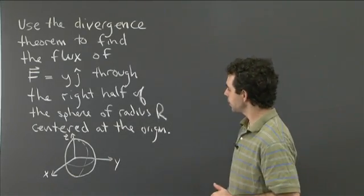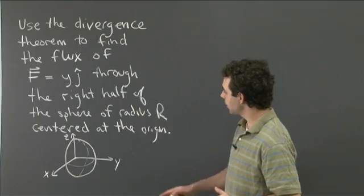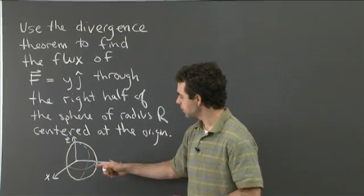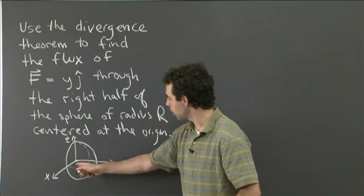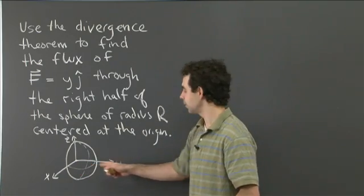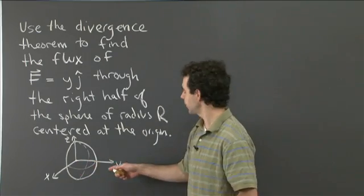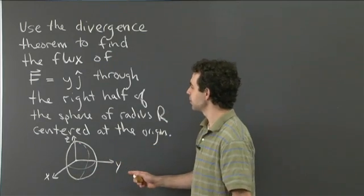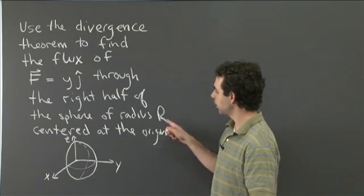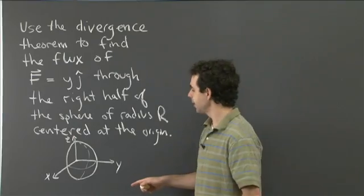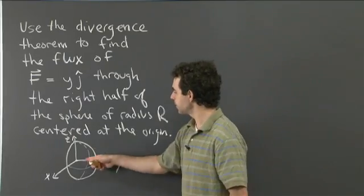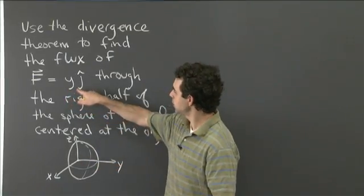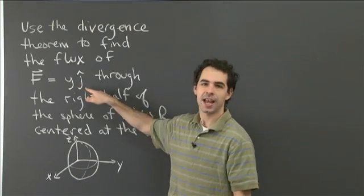So in this situation, I have a hemisphere — it's the right half of a sphere, the part where y is positive or non-negative. So just the surface of that hemisphere. It has radius r and it's centered at the origin. So I have this hemisphere and I have the field F,